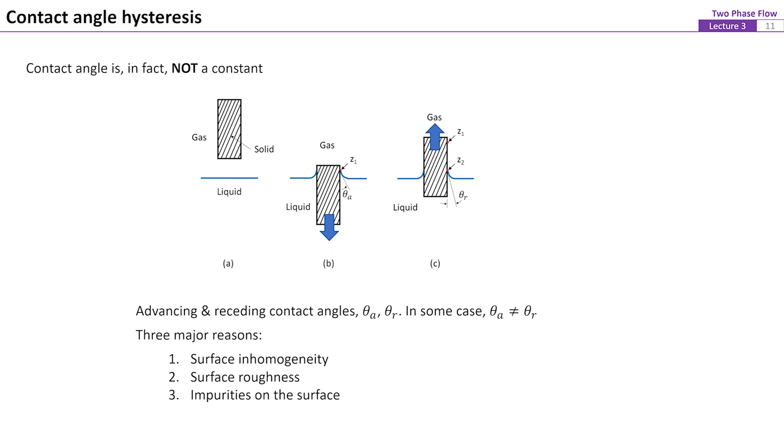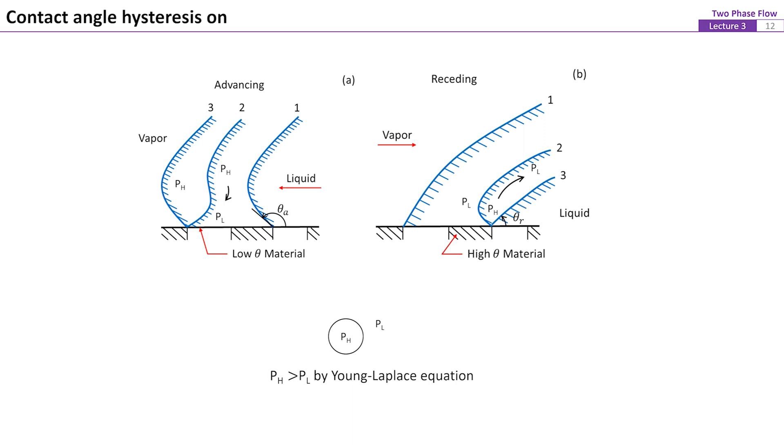However, for most systems, thetaA and thetaR will not be equal. This phenomenon is called contact angle hysteresis. The main reasons cause this contact angle hysteresis include the surface inhomogeneity, the surface roughness, and the impurities on the surface.